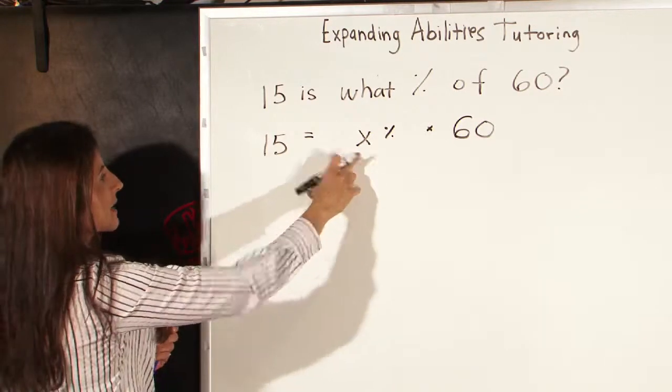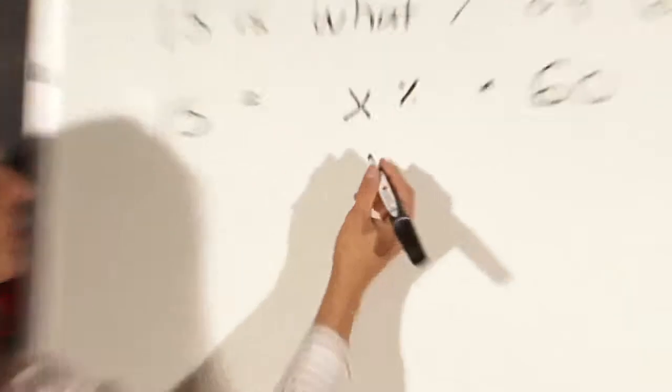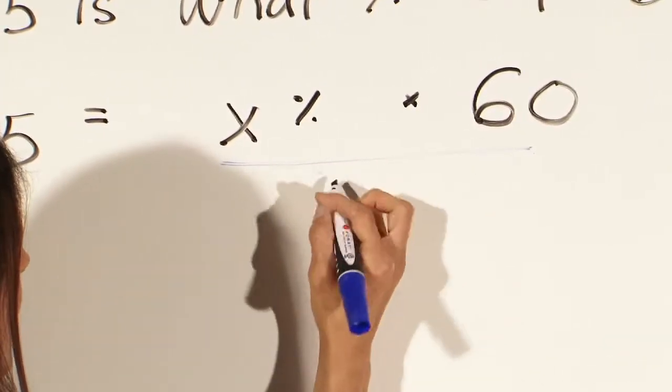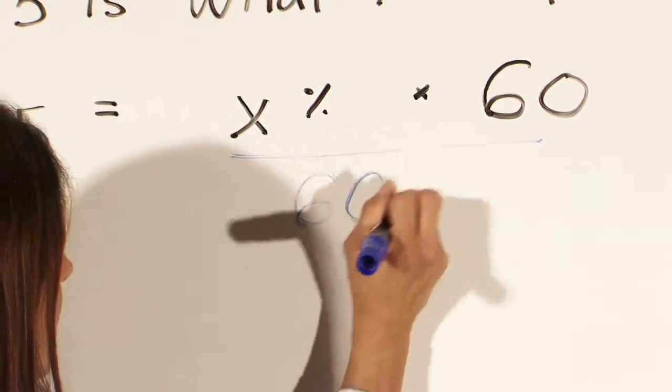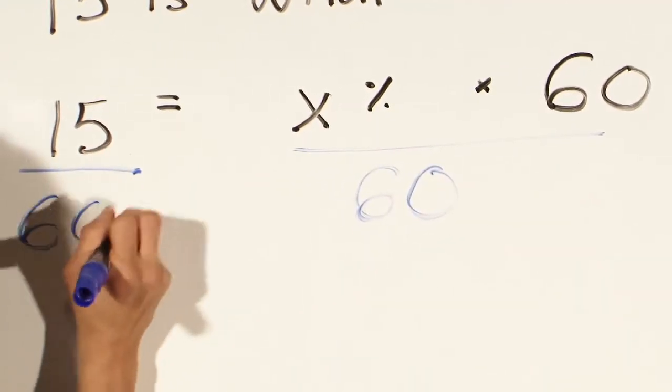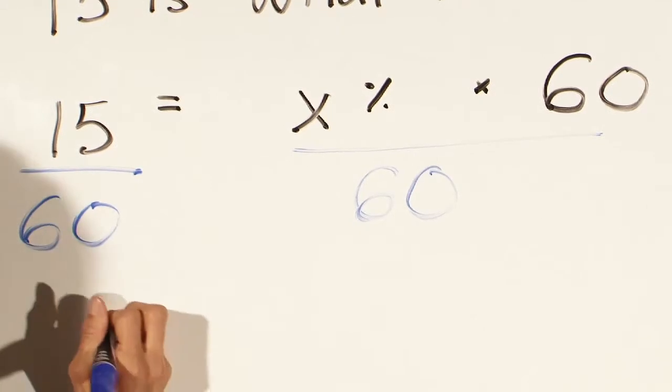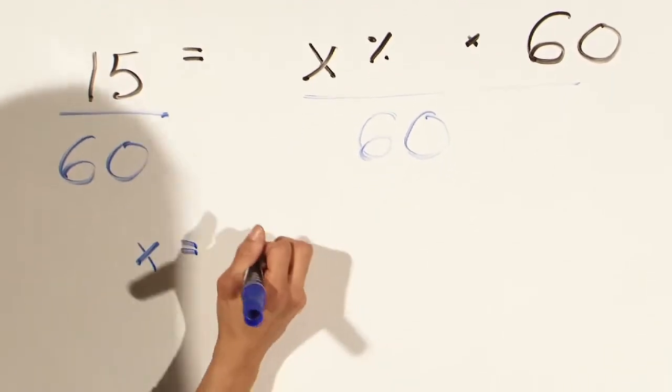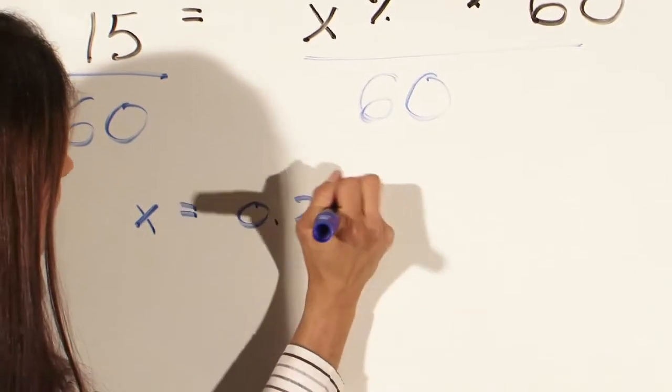So we want to get x alone. And we have multiplication, so what we'll do is divide both sides of the equation by the number 60. And so we're left with x equals 15 over 60, and 15 divided by 60 is .25.